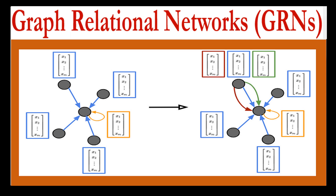The GRN can use this information to make predictions about the future performance of companies in the industry. In this example, the graph consists of nodes representing different companies and edges connecting them based on their relationships. The GRN learns patterns by analyzing features of the nodes and edges — such as the financial statements of the companies and the type of relationship between them — which allows it to make accurate predictions about the future performance of companies based on the relations between them.